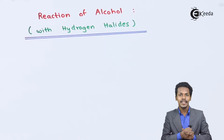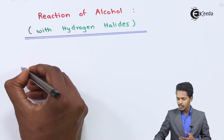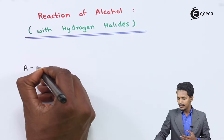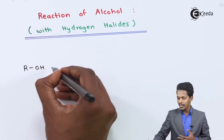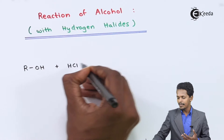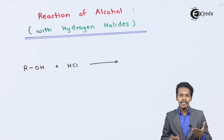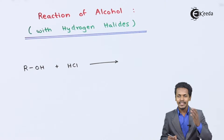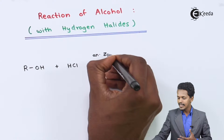Let's start with the reaction of alcohol with hydrogen chloride. Considering the general reaction where ROH is the alcohol reacting with HCl, it has been found that this reaction is not very easy compared to the reaction of HBr with alcohol. We have to use a certain catalyst, which is anhydrous ZnCl2.